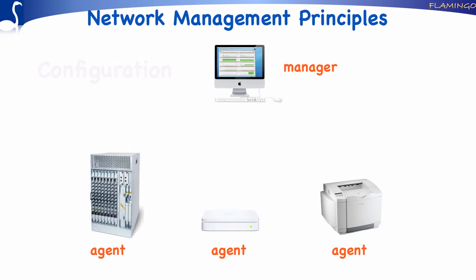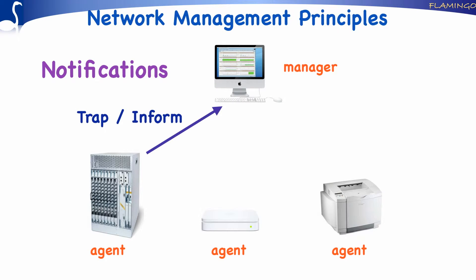Finally, agents may be able to autonomously signal certain events to the manager, for example in case an interface went down or the device has been reset. In the first version of SNMP, agents could signal only a limited number of events to the manager using the TRAP PDU. In later versions of SNMP, the capabilities for agents to notify all kinds of events have been extended. For that purpose, a new PDU was introduced, the INFORM PDU, which is acknowledged by the manager, so the agent knows the manager is aware of the event.